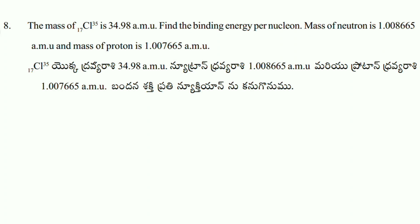Short question eight: the mass of Cl-35 (17Cl35) is 34.98 AMU. Find the binding energy per nucleon. Mass of proton is 1.007665 AMU.